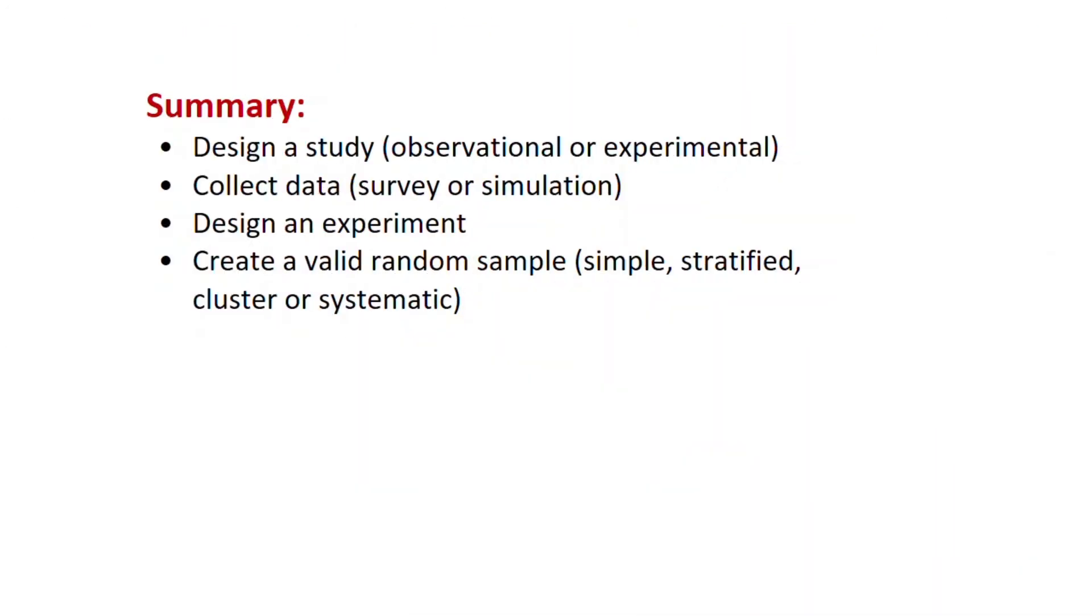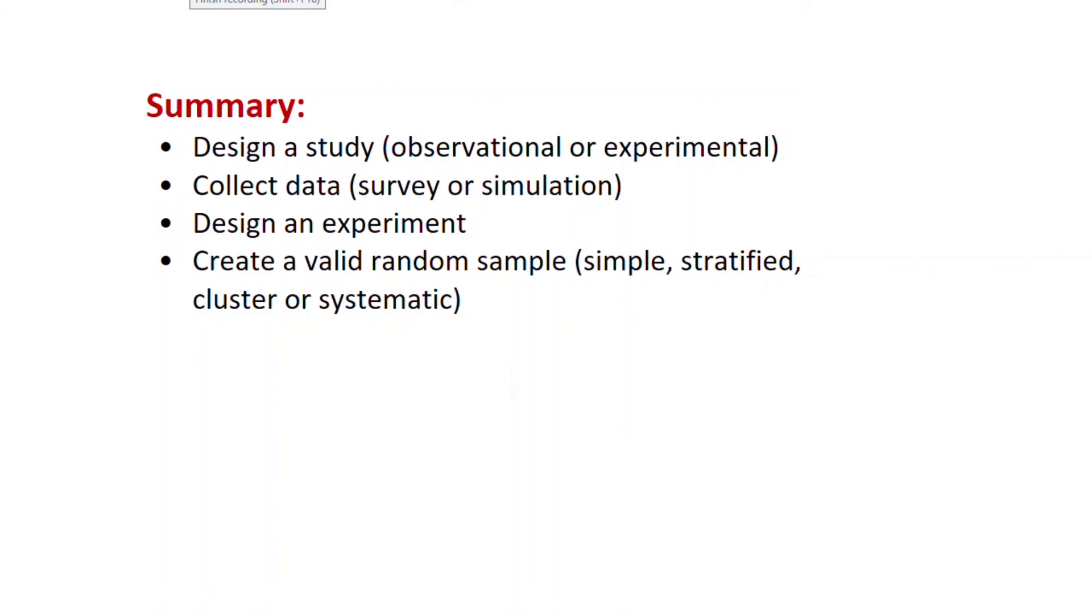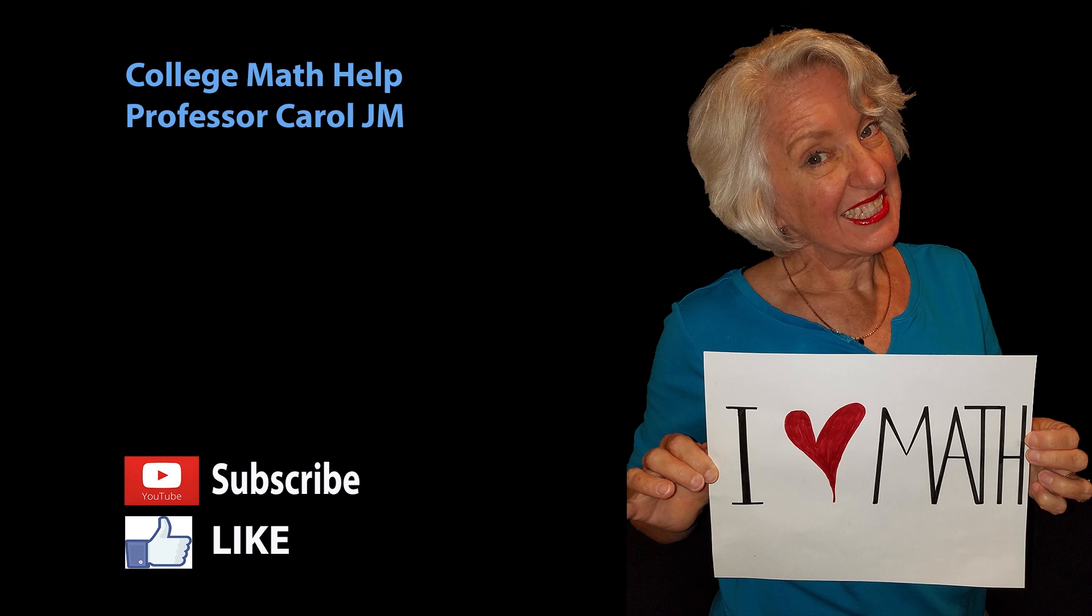In summary, we talked about how to design a valid statistical study and how to look at the difference between an observational or an experimental study. We discussed collecting data either using surveys or simulations, and how to design an experiment if our study is an experimental one. And very importantly, how to create a valid random sample. It must be random. There's different ways of collecting a random sample: there are simple, stratified, cluster, or systematic methodologies. We don't want to get a biased sample by just asking anyone who's interested. That leads to a biased study and invalid results. I would like to invite you to like this video and subscribe to this channel. Thanks very much for listening.